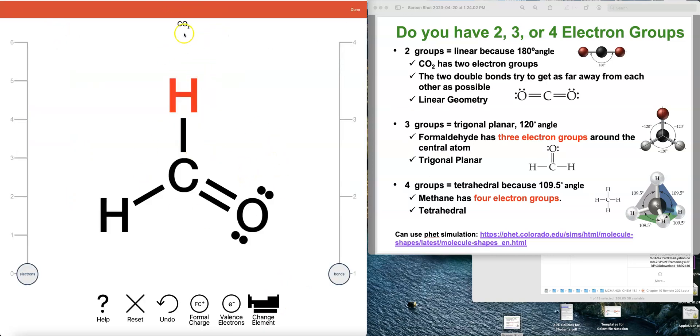And again, what I like about the active program is this formaldehyde, because it has three electron groups, it's showing this trigonal planar arrangement and the rough angle of 120 degrees, unlike the linear at 180.